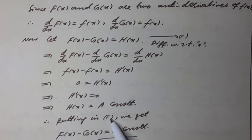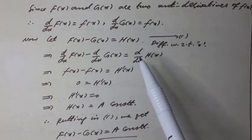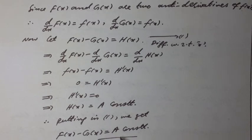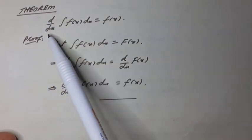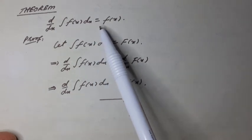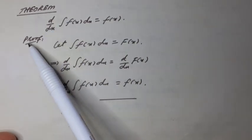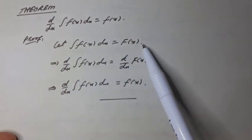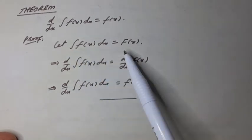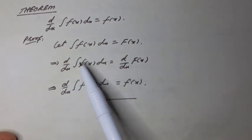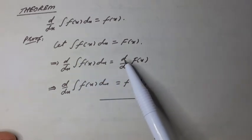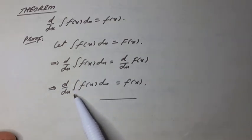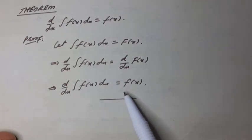Putting in Equation 1, we get F(x) minus G(x) equal to a constant. Theorem: d/dx of ∫f(x)dx is equal to f(x). Proof: Let ∫f(x)dx equal to F(x). Differentiating both sides with respect to x, we can write the derivative of ∫f(x)dx equal to dF/dx, which equals f(x).